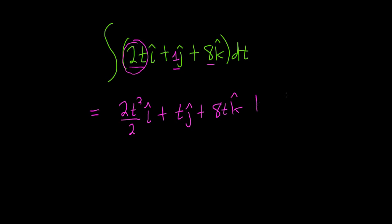Then we add our constant of integration, capital C. Note this is actually a vector. So this equals t squared i hat plus t j hat plus 8t k hat plus our arbitrary vector of integration, capital C.